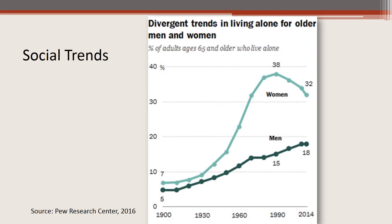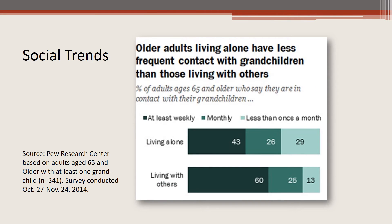Here's a graph of the data from the Pew Research study, showing the gender gap for those 65 and older who are living alone is narrowing. Since 1990, older women have become less likely to live alone, and older men have become more likely to live alone. Older adults living alone are somewhat less likely than older adults living with others to be in contact with their grandchildren. Among adults ages 65 or older with at least one grandchild, 43% of those who live alone say they are in contact with their grandchildren at least weekly, compared with 60% of those living with others. Older adults living alone are about twice as likely to communicate with their grandchildren less than once a month.